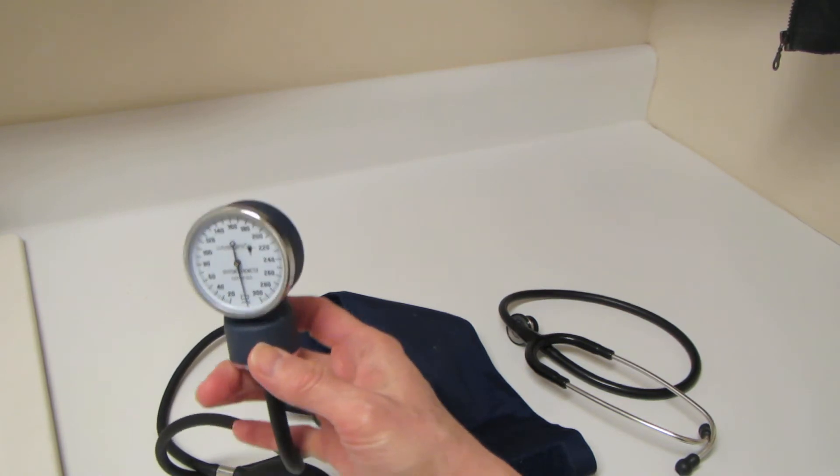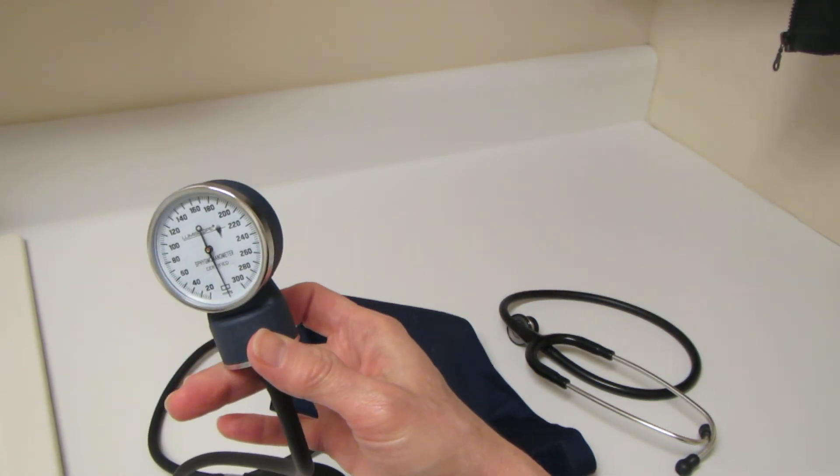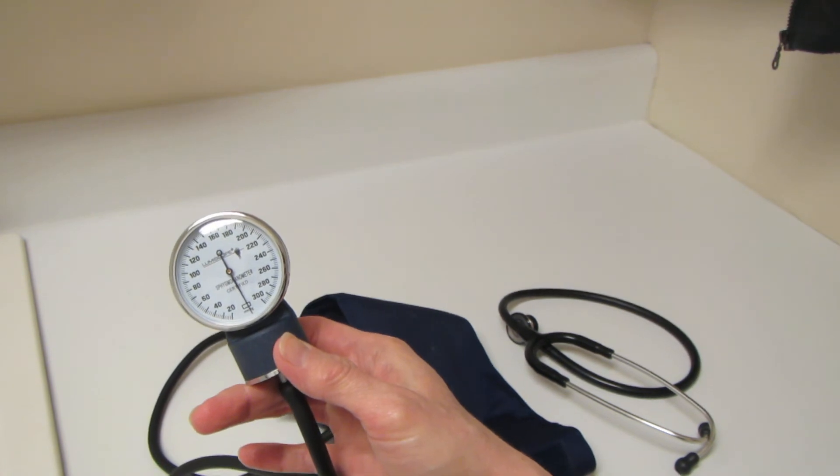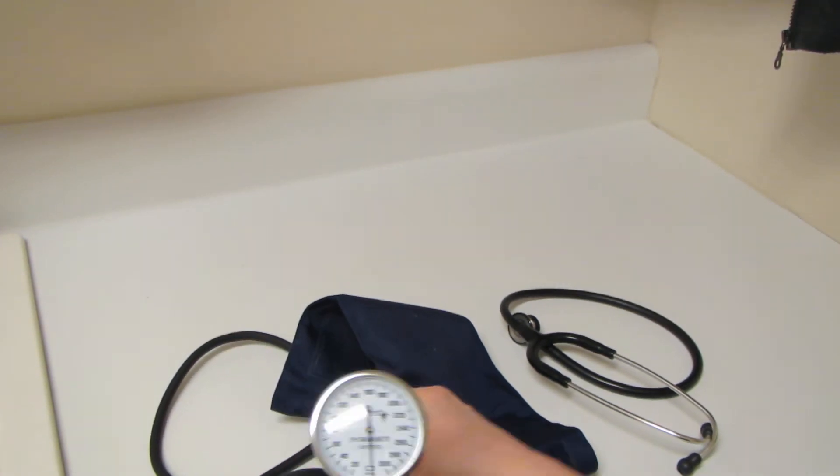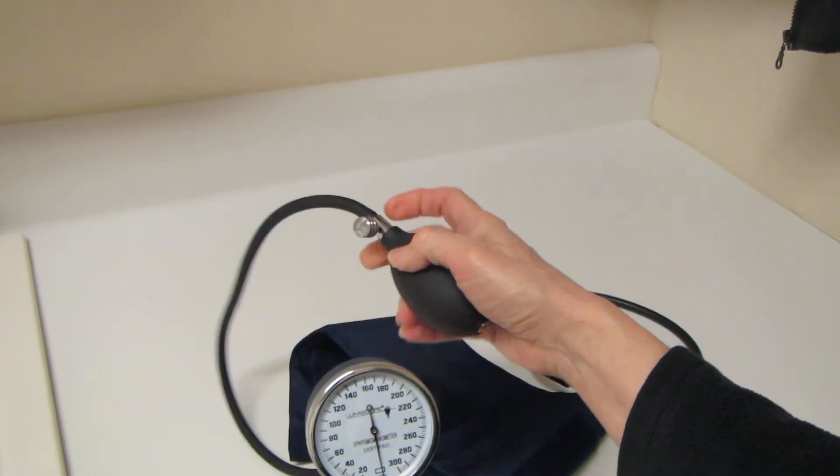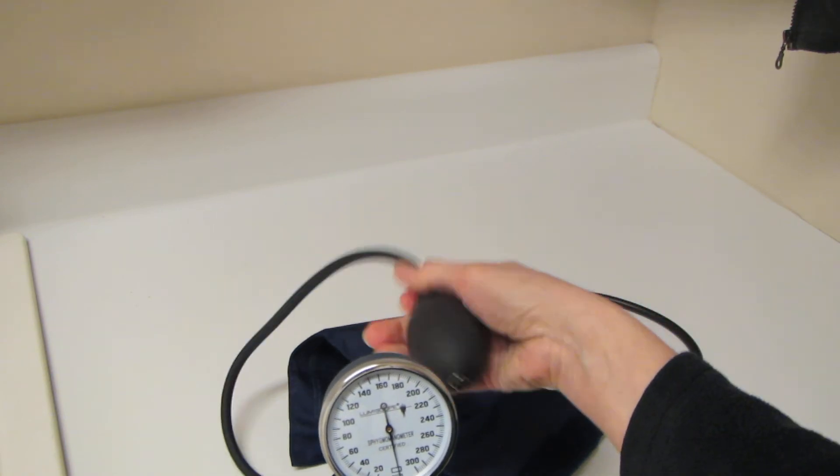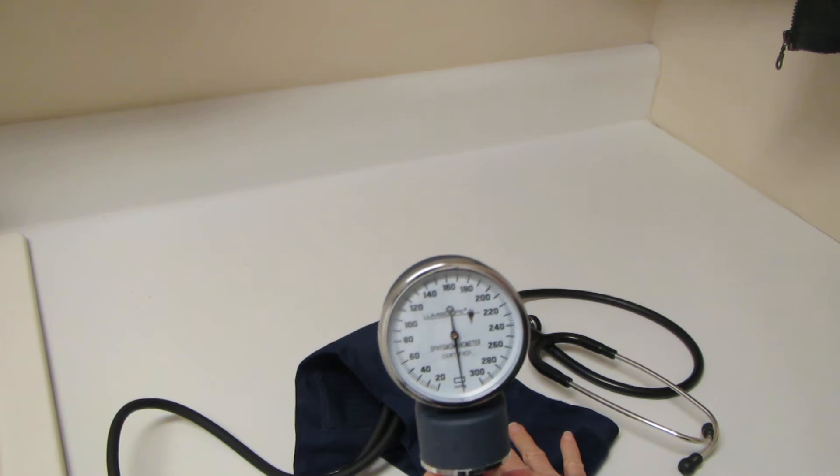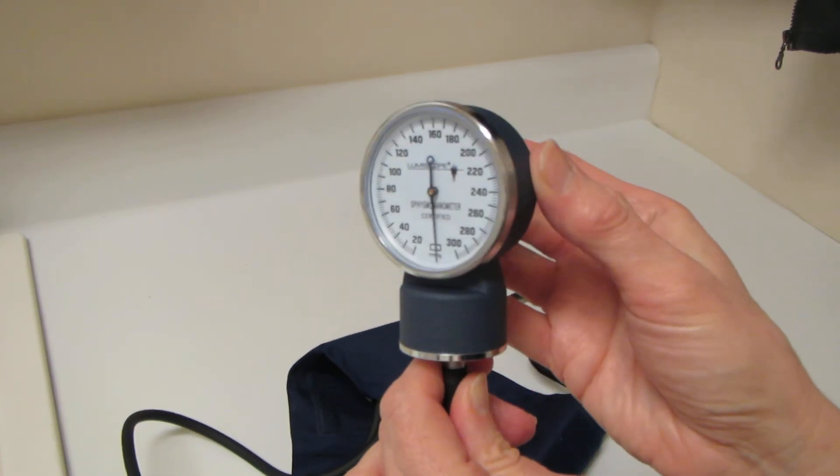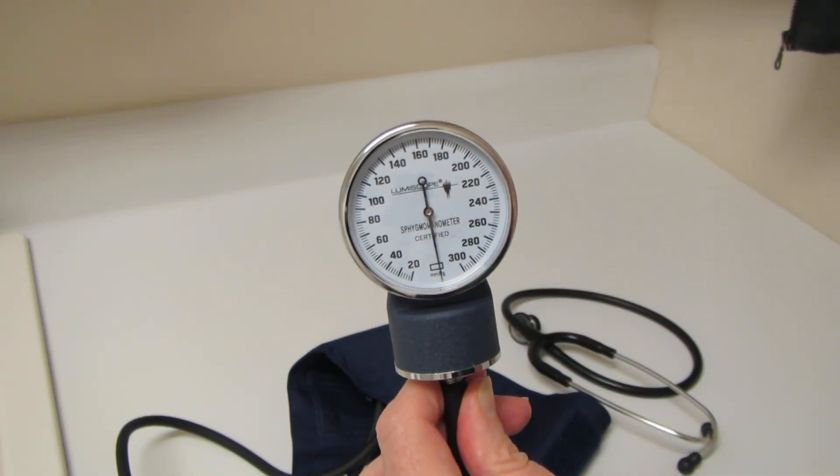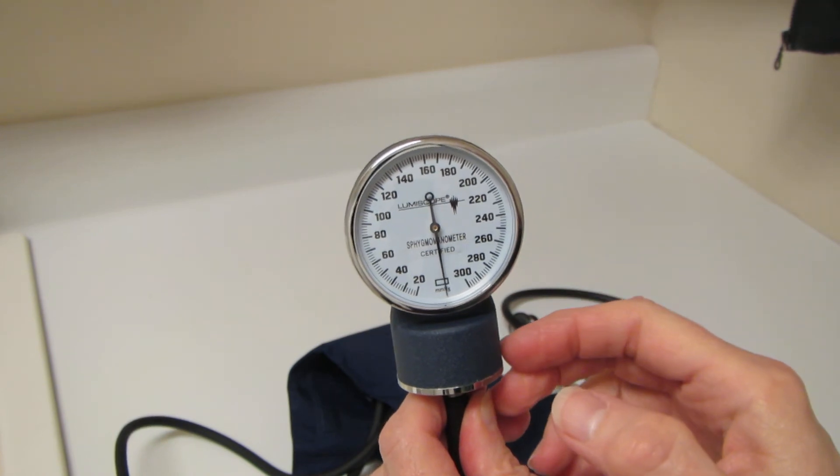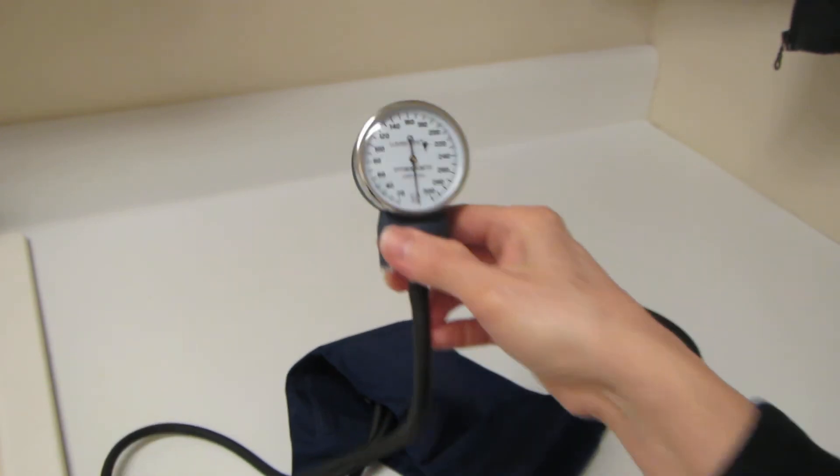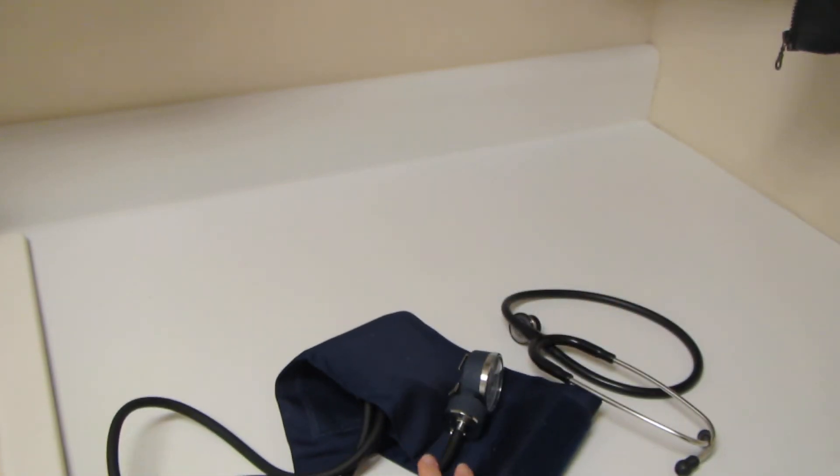Now the third part is this pressure gauge. This is what we're going to use to measure pressure changes. We're going to tighten that down and squeeze the bulb, forcing air into the cuff, and use the sphygmomanometer's gauge to measure those pressure differences.